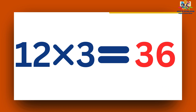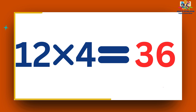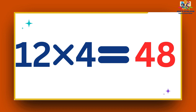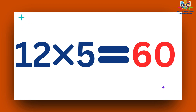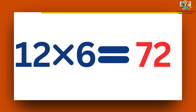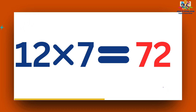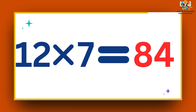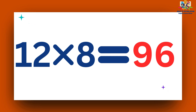12 ones are 12. 12 twos are 24. 12 threes are 36. 12 fours are 48. 12 fives are 60. 12 sixes are 72. 12 sevens are 84. 12 eights are 96.